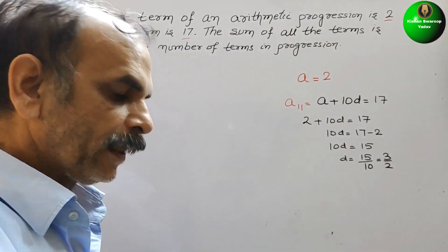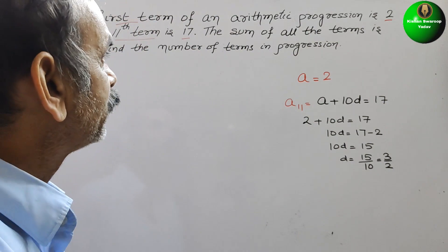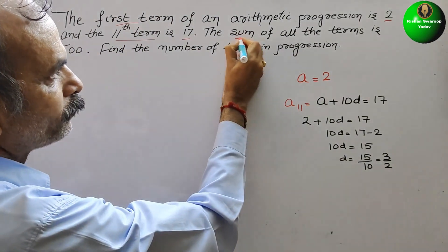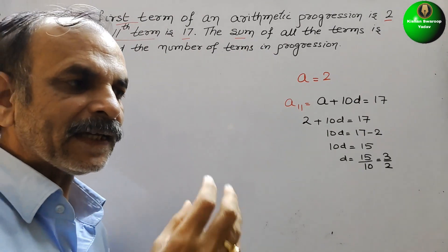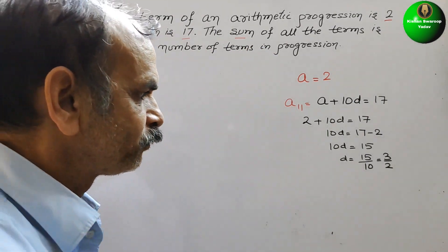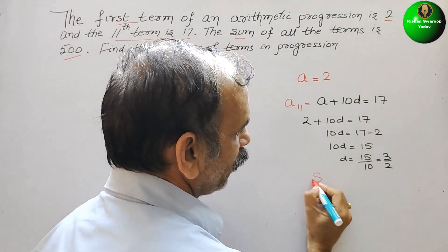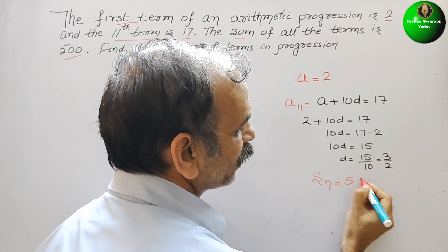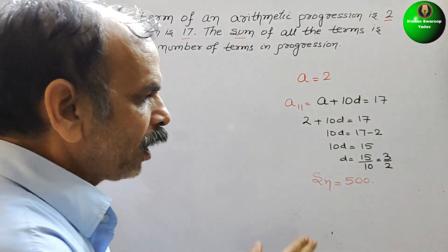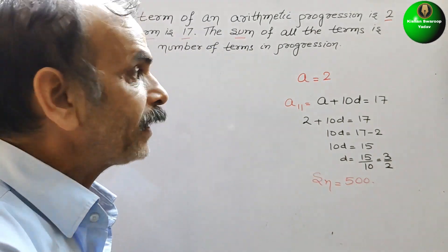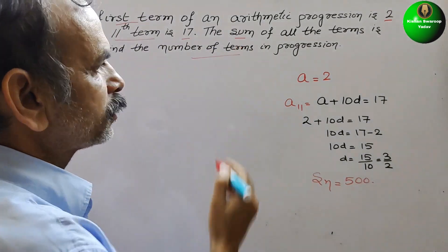Now, next what they have given. See that, they have given the sum is 500. That means Sₙ is 500, Sₙ is 500. Now, we will write the formula for Sₙ to find out the number of terms.